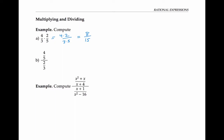If we want to divide two fractions, like in the second example, then we can rewrite it as multiplying by the reciprocal of the fraction on the denominator. So here we get four fifths times three halves, and that gives us 12 tenths. But actually, we could reduce that fraction to six fifths.